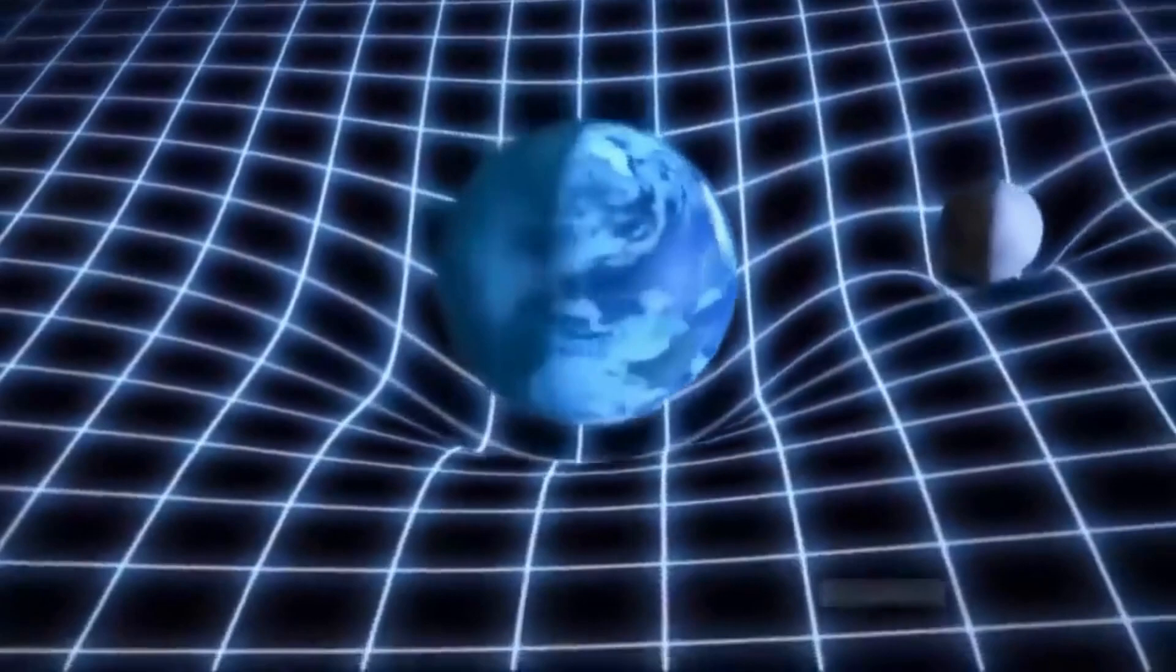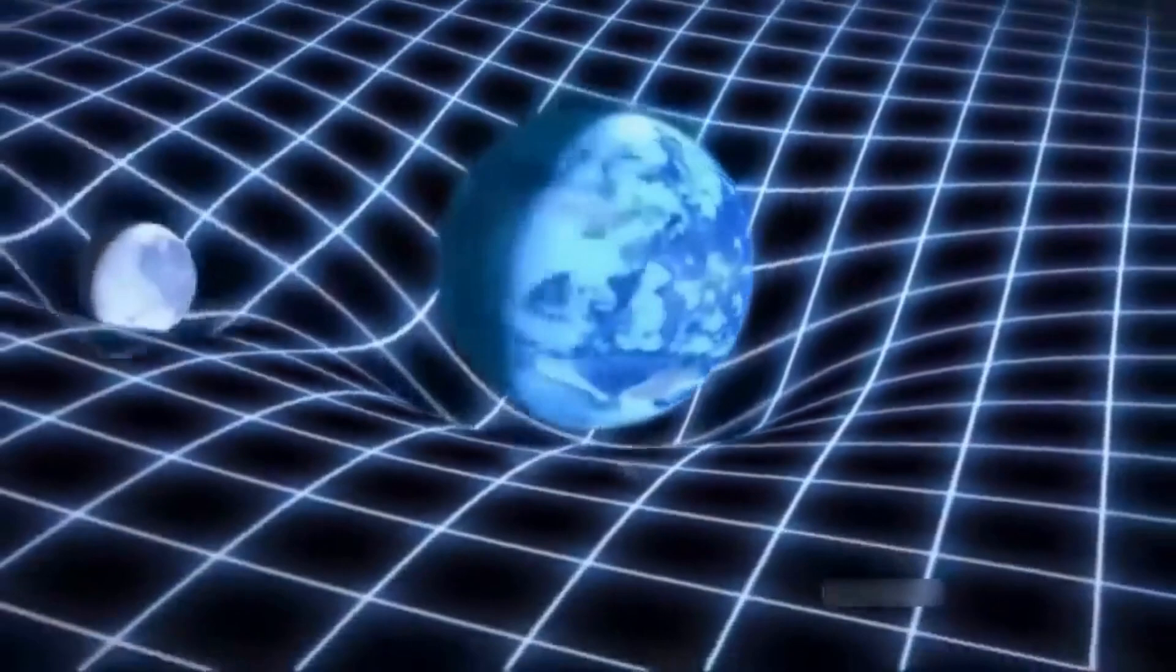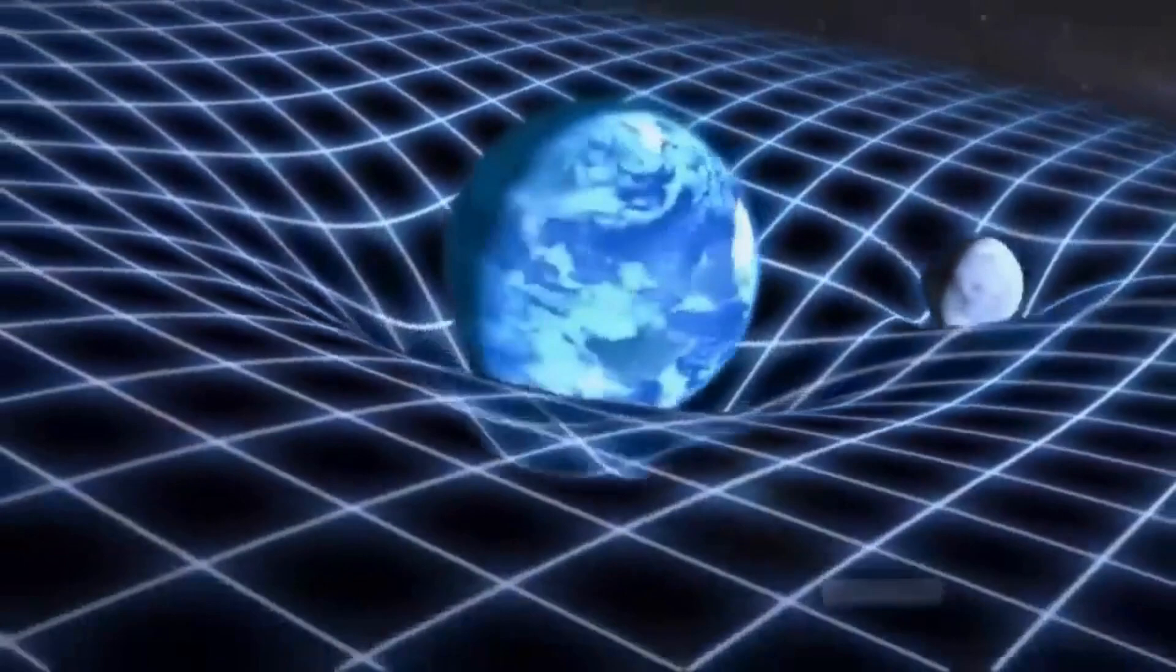But what happens if an object is much, much more massive than the Earth or the Sun? In theory, it could warp the fabric so much, it would create an actual hole in space-time.